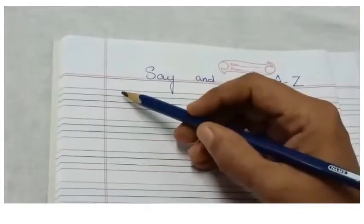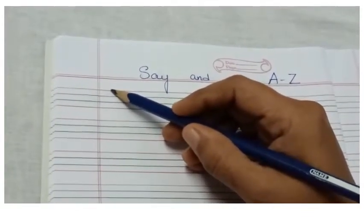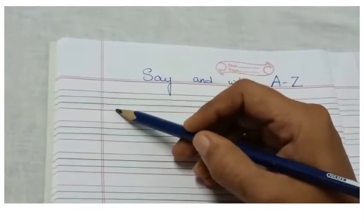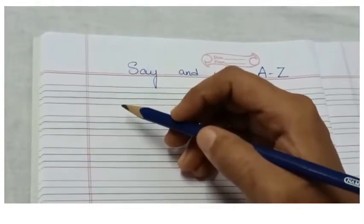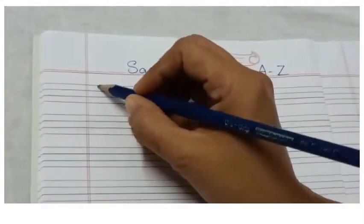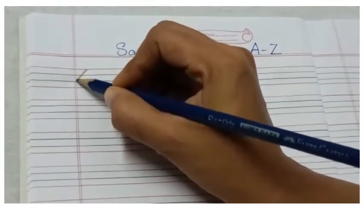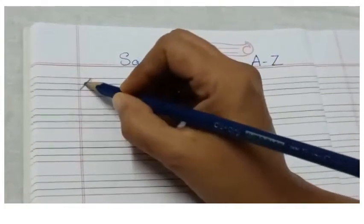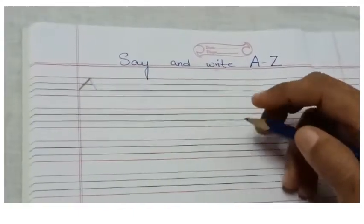Children, can you all see? This topmost line is in red color. How many lines are there? Basically there are four lines, but we write all the uppercase letters in the first three lines. Keep the pencil on the red line and from there we are going to draw a slanting line till the black line, again a slanting line to the black line, and a sleeping line on the second line. This is how we write capital letter A.